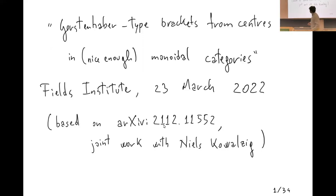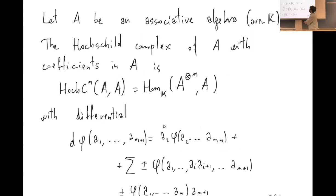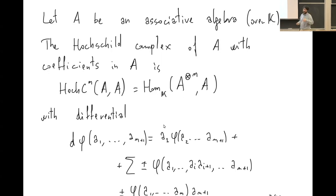Let me revise the construction of the Gerstenhaber algebra structure on Hochschild cohomology. We have seen this on the sub-complex of poly-differential operators, but let me revise the general construction. Let A be an associative algebra — by associative algebra I always mean one with a unit — and out of this we can construct a cochain complex called the Hochschild cochain complex. In degree n we have k-multilinear maps from A to A, where k is the base field.